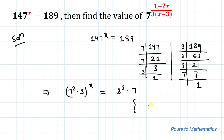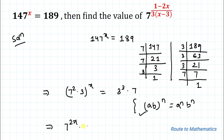Here I will apply an exponential rule: (ab) to the power n equals a to the power n multiplied with b to the power n. By applying this rule we get 7 to the power 2x multiplied with 3 to the power x equals 3 to the power 3 multiplied with 7.